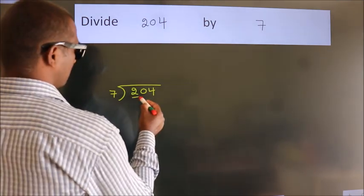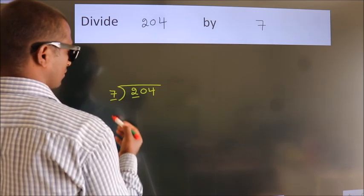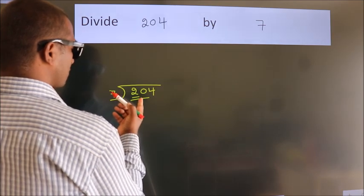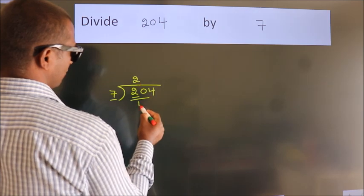Here we have 2. Here 7. 2 is smaller than 7, so we should take 2 numbers: 20. A number close to 20 in the 7 table is 7 twos, 14.